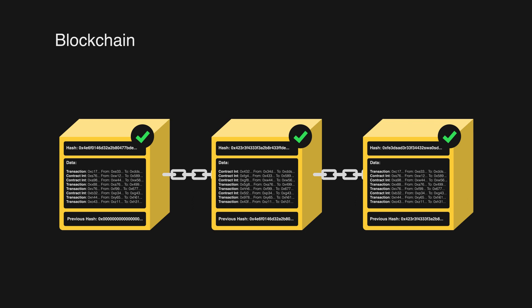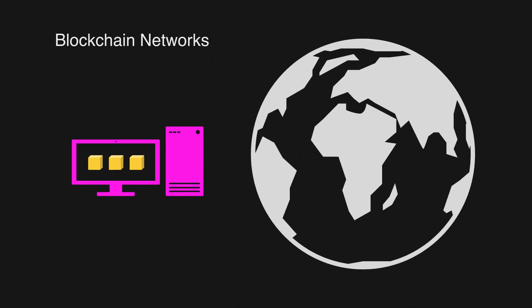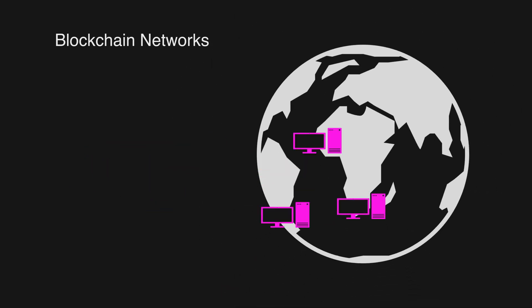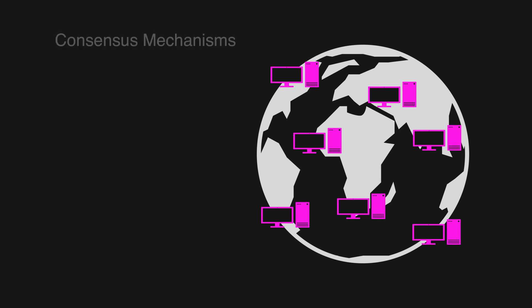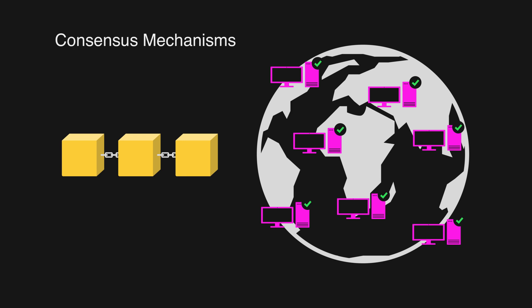Unlike traditional ledger systems, which are typically maintained by a central authority, a blockchain is maintained by a network of computers. This network is made up of nodes — computers or devices that have a copy of the blockchain — and participates in the consensus process to validate new transactions and add them to the chain. Consensus mechanisms are algorithms used in blockchain technologies to ensure that all nodes on the network agree on the state of a blockchain and that new transactions are valid.